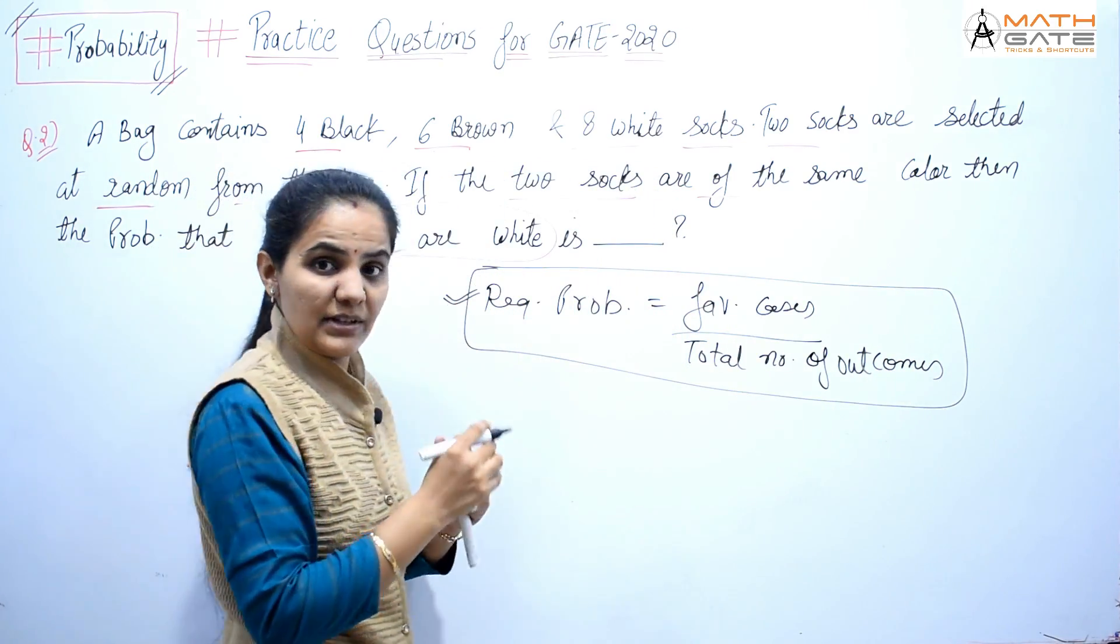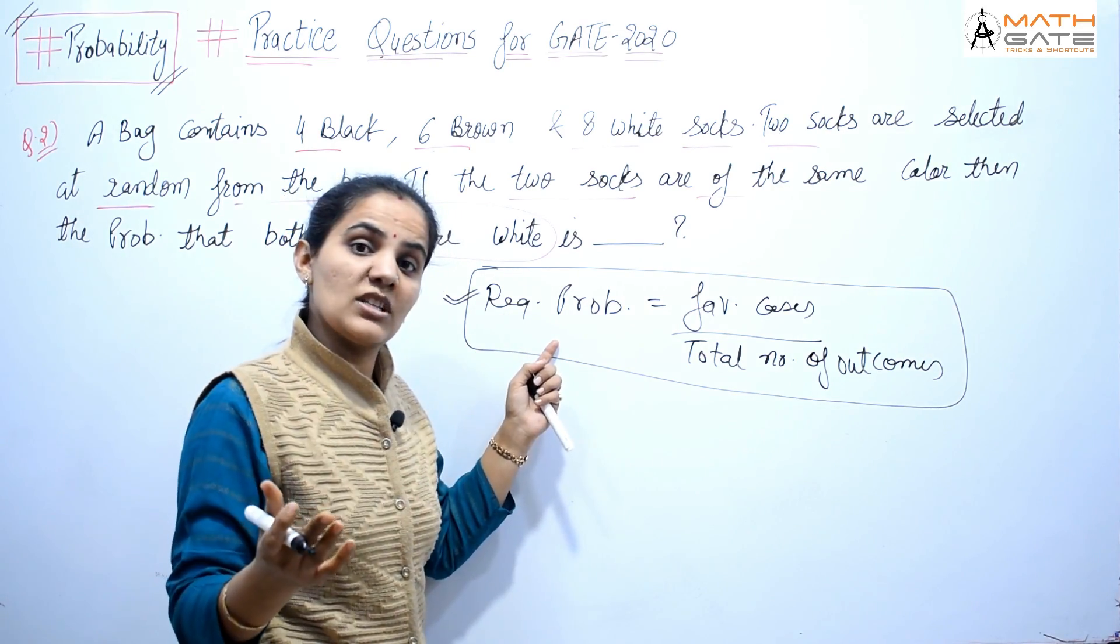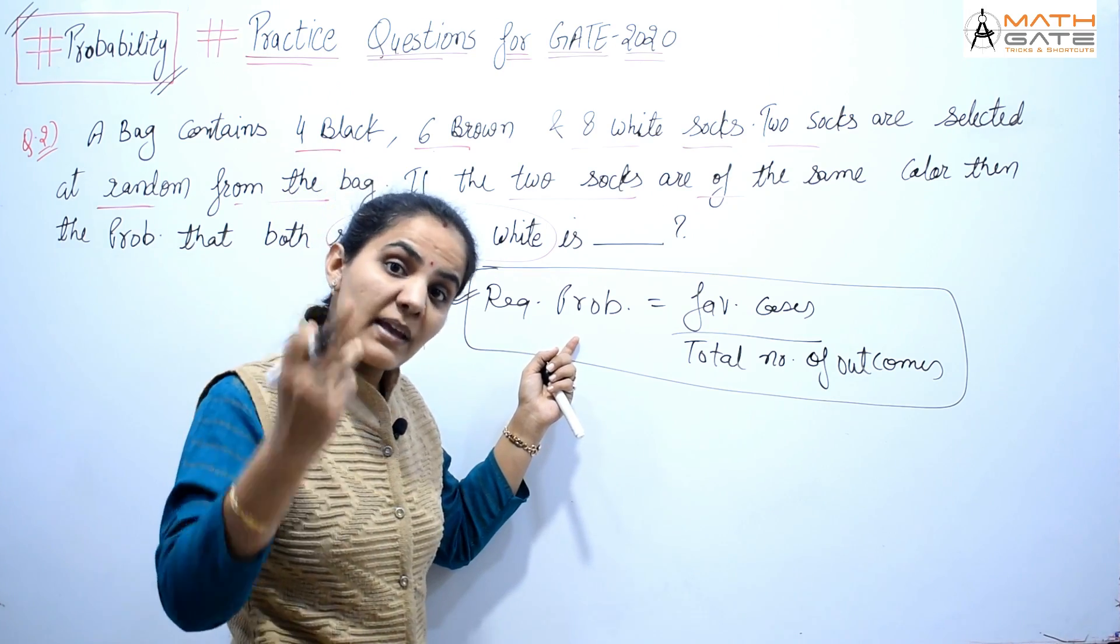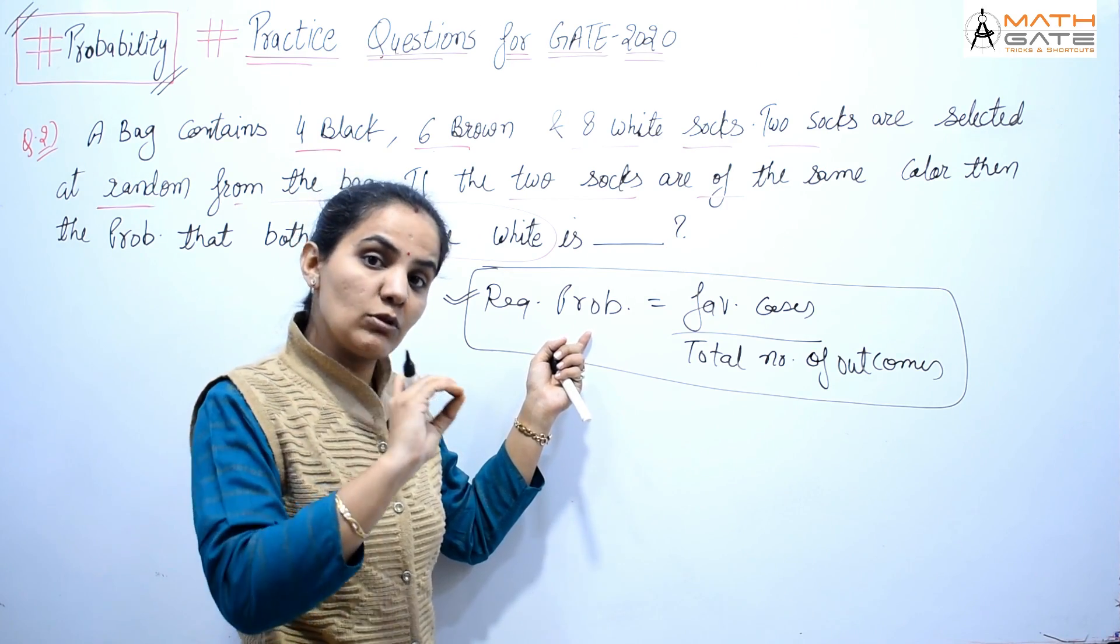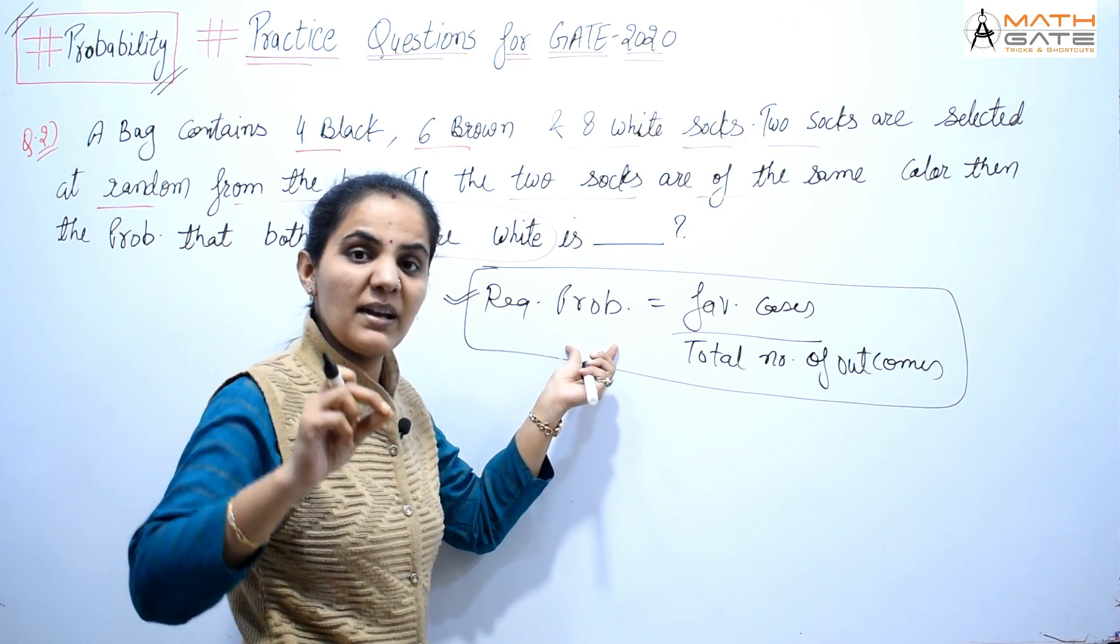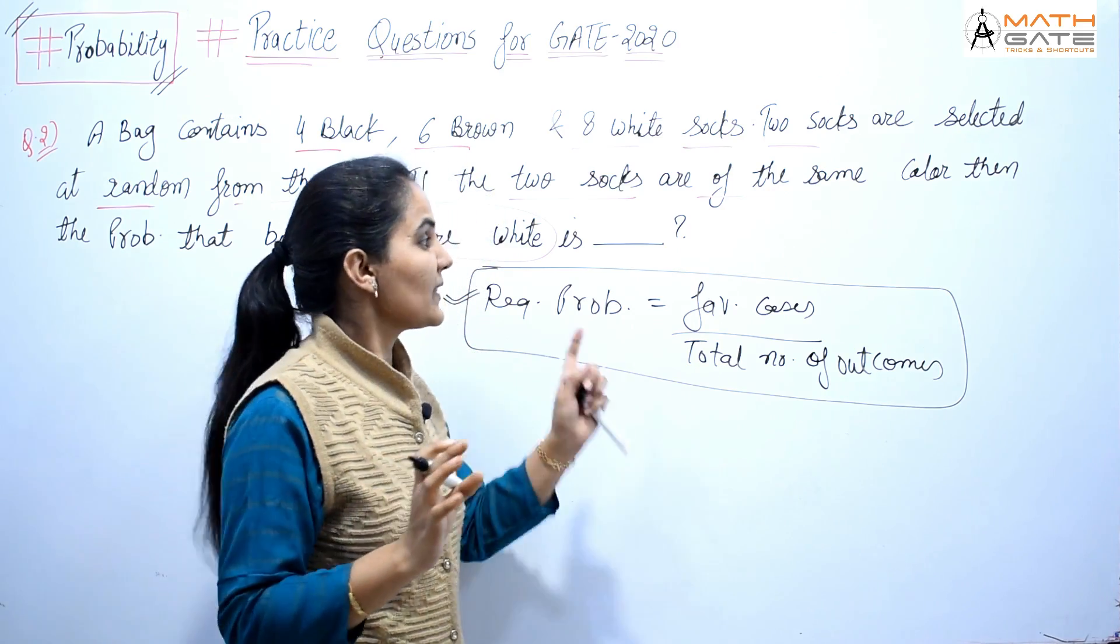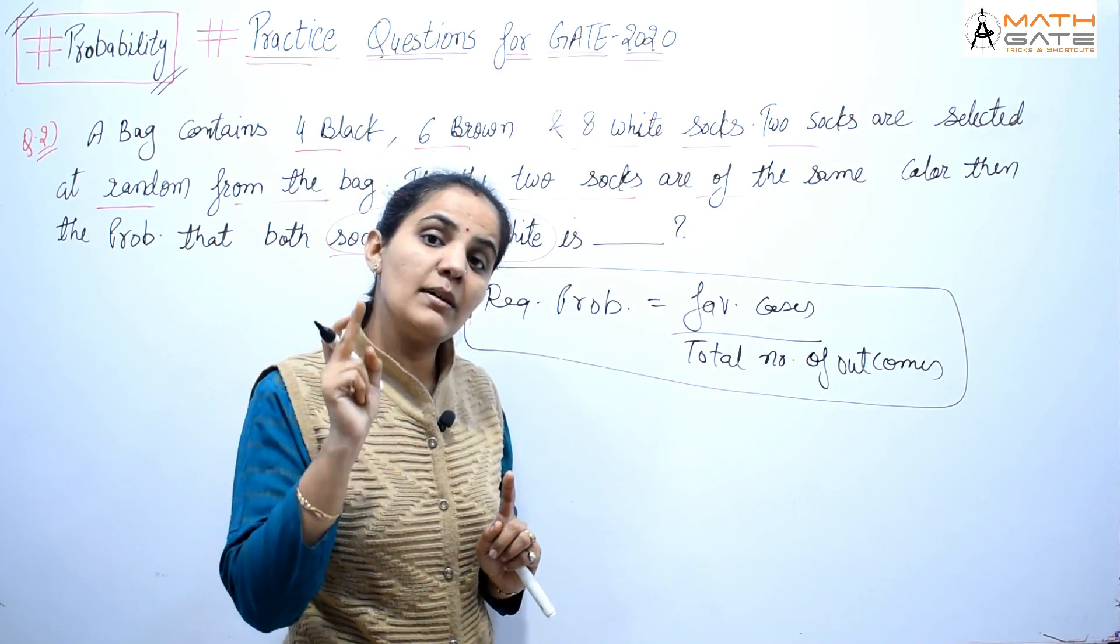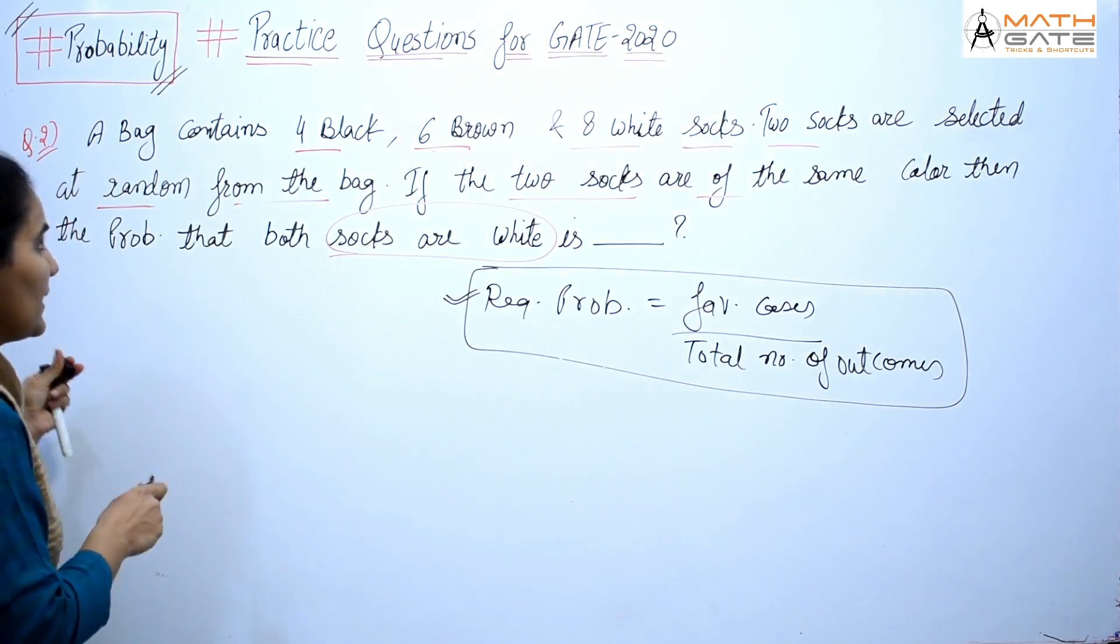Just this basic formula: required equals favorable by total. If you've seen the previous videos, I've solved all questions with this formula. Some questions are conditional probability, but we can solve them. Some questions are Bayes theorem, but we can solve them. You won't have to make any extraordinary effort. If your basics are strong in any question - if you know what's favorable and what's total - you'll be able to solve the question. Now quickly, this question is conditional probability, but I won't tell you that. I'll show you basic probability. So in this question, what is given?